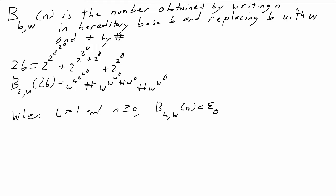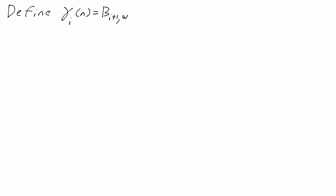This connection is why the ordinals below epsilon_0 are related to the Goodstein sequence. In fact, Goodstein was thinking in the opposite direction — he knew about the ordinals and invented hereditary base n notation exactly so there would be this correspondence. We're going to assign ordinals to these sequences to use as a timer, defining ordinals gamma_i(n) equal to b_{i+1, omega}(g_i(n)). Gamma_i(n) is the timer which corresponds to g_i(n), so starting with n we have two parallel sequences: the sequence of numbers g_i(n) and the sequence of ordinals gamma_i(n).